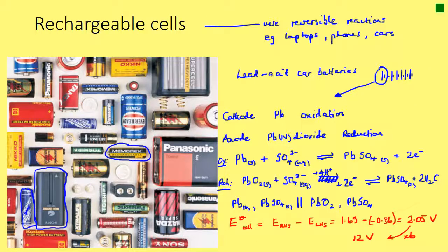Rechargeable cells, by contrast, use reversible reactions — reactions that are practical to reverse. You might see them in laptops, phones, and cars. Car batteries are rechargeable; they recharge using the motion of the car as you drive along.